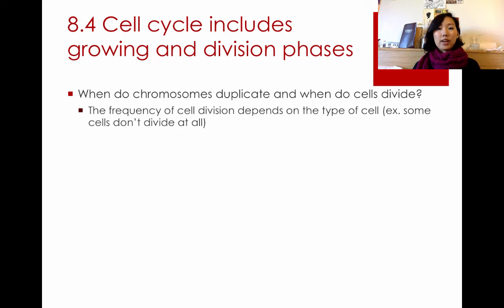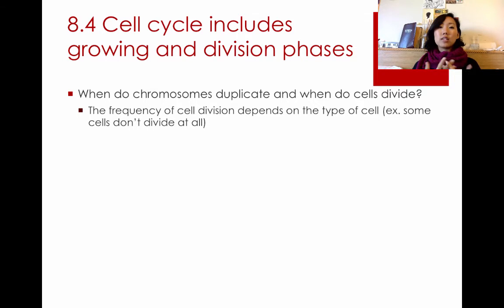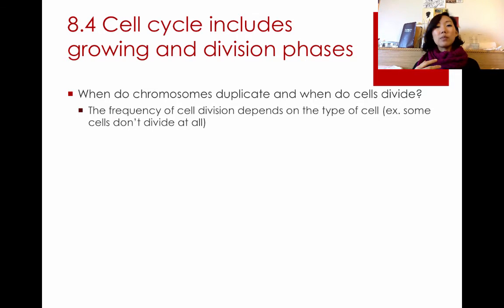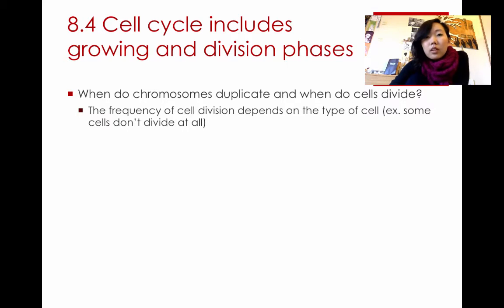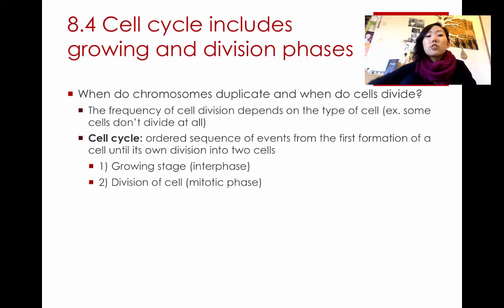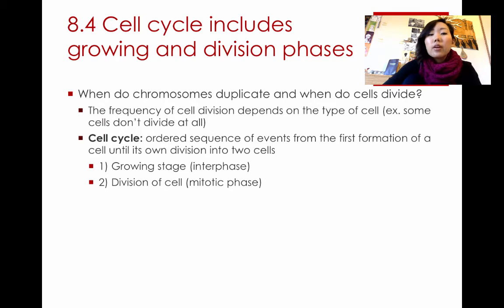When do cells divide and how do they divide? The frequency of cell division depends on the type of cell and where it is in its cell maturity. Some cells like mature heart muscle cells and nerve tissues don't divide at all when fully mature, so if you damage them you can't replace them. But other cells like skin cells reproduce all the time to replace what's been lost. The cell cycle describes the entire process of cell life from when it's first formed until it finally divides into two daughter cells.